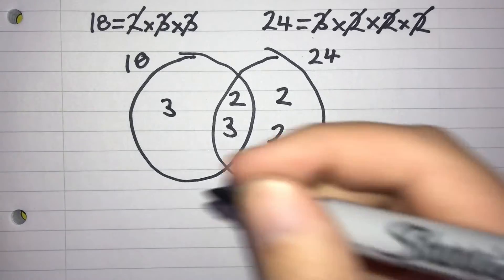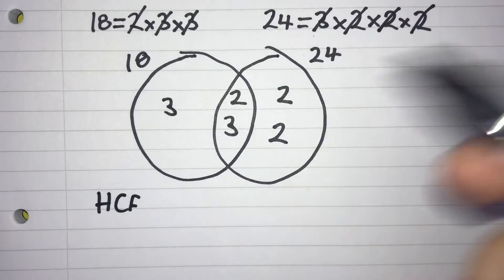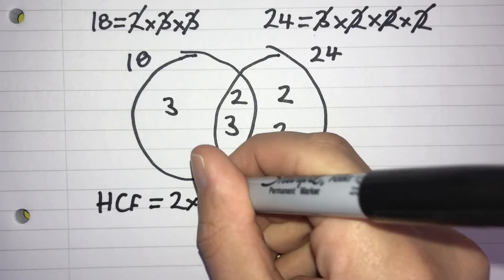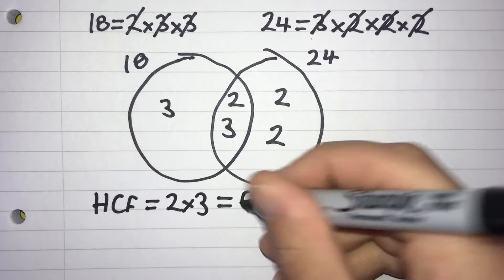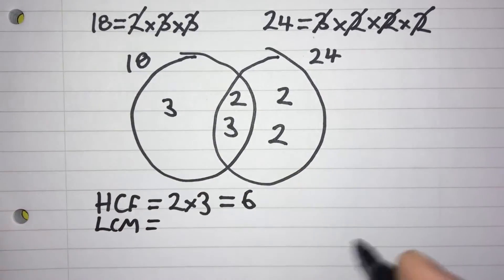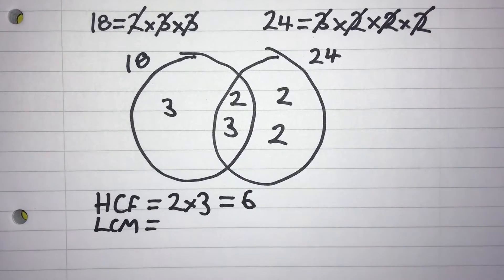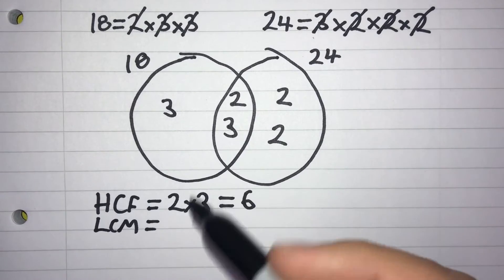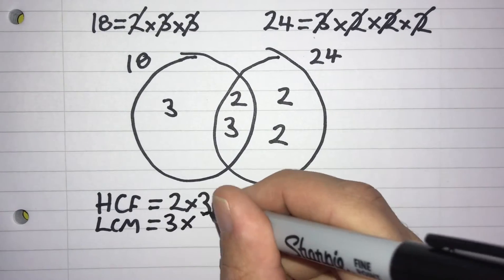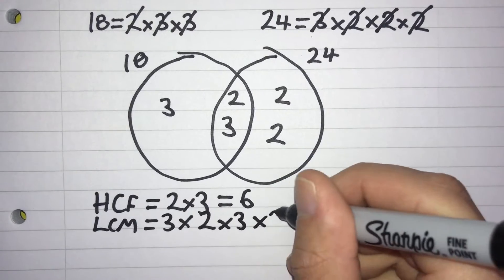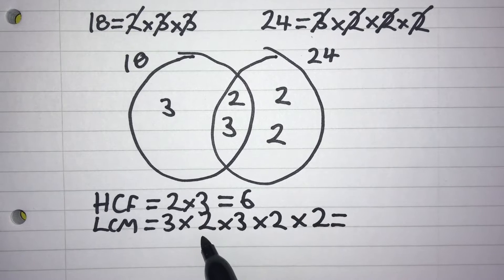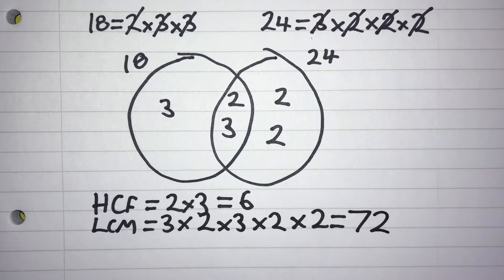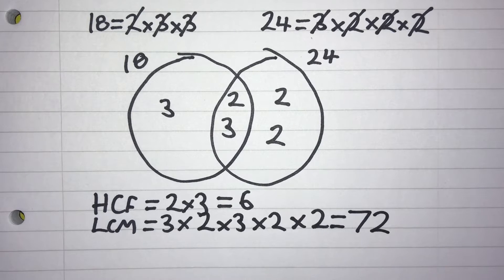Now that we've filled out our Venn diagram we can find our highest common factor by multiplying together all the numbers in the intersection. In this case that's 2 multiplied by 3, so our highest common factor for 18 and 24 is 6. For our lowest common multiple we multiply all of the numbers that are in our Venn diagram — we keep the intersection numbers together so we don't count them twice. So that's 3 times 2 times 3 times 2 times 2, which gives us 6 times 3 equals 18, times 2 equals 36, times 2 equals 72. So our lowest common multiple for 18 and 24 is 72.